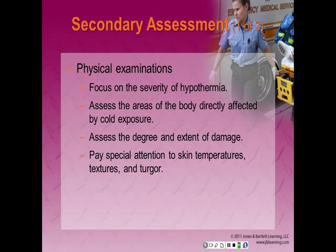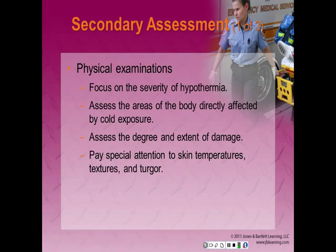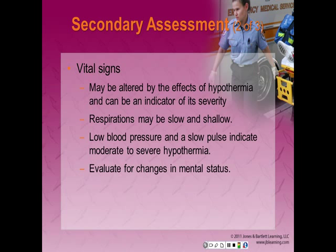Perform a secondary assessment — your physical exam. Focus on how bad the hypothermia really is. Assess areas of the body directly affected by cold exposure and assess the degree and extent of damage. The numbing effect of cold on both the brain and body may impair the patient's ability to tell you about other injuries or illnesses. Pay special attention to skin temperatures, textures, and turgor. Take vital signs — respirations may be slow and shallow resulting in low oxygen levels, low blood pressure and a slow pulse also indicate moderate to severe hypothermia, and evaluate for changes in mental status.